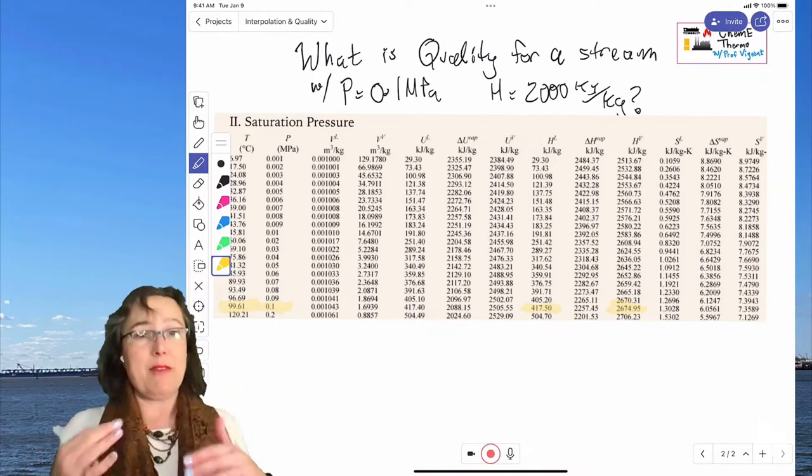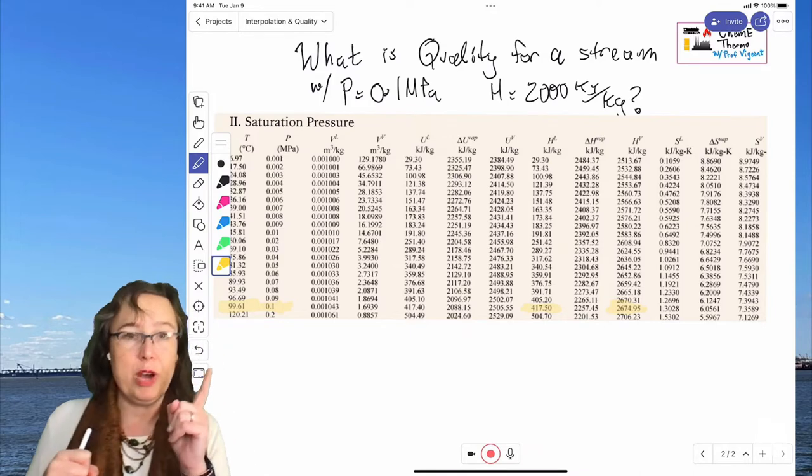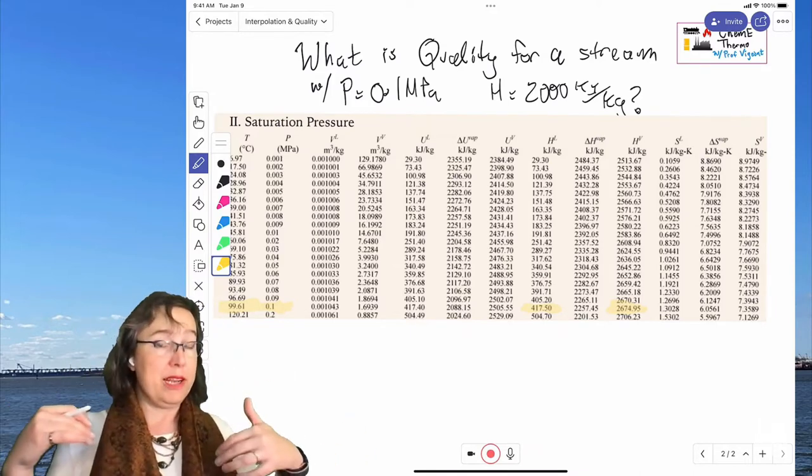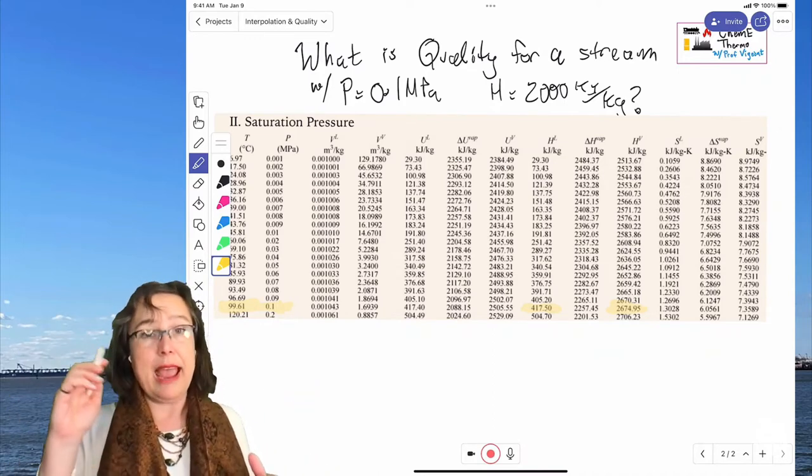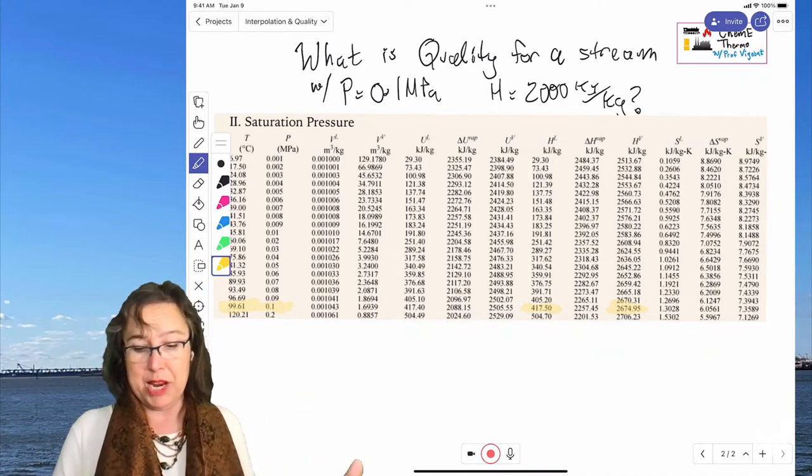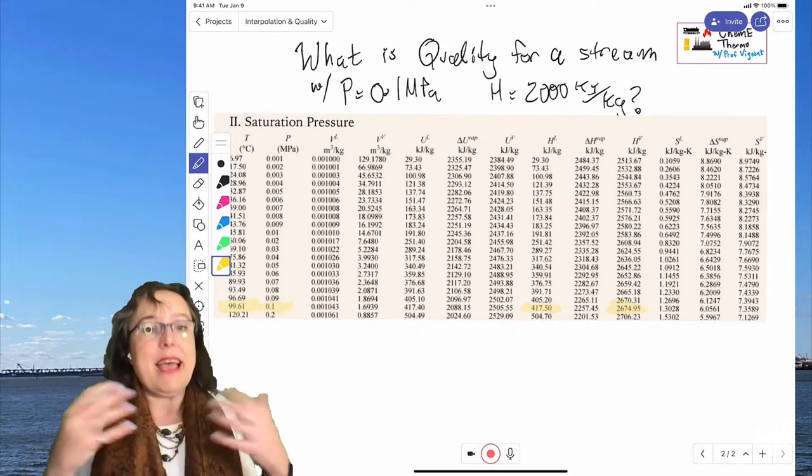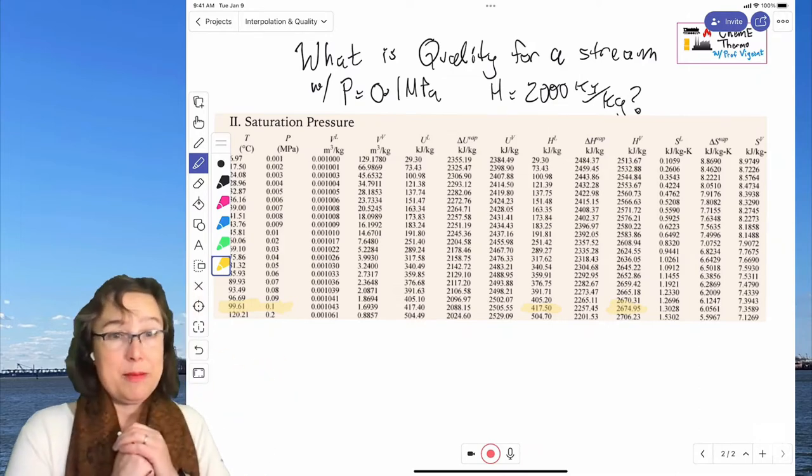So we know we have a quality because we know its pressure is 0.1. So it's got to be here or in the superheated table. And then we know its enthalpy is 2000, and 2000 is a value that's between 417 and 2674. So that's how we know it's got to be a quality. Every set of conditions exists only once in the steam table.